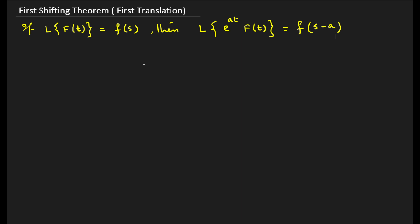The second theorem is the first shifting theorem, also called the first translation theorem. If it is only f(t), then we write F(s). But here, with f(t), we have one more term e^(at). So if one exponential term comes, the form of F(s) changes to F(s−a). This is valid when the additional term is e raised to a constant times t, since the variable t must match.